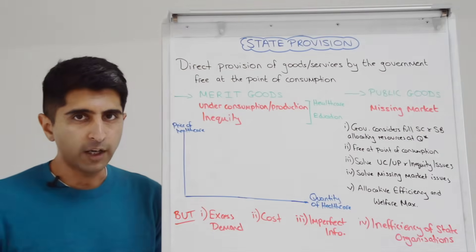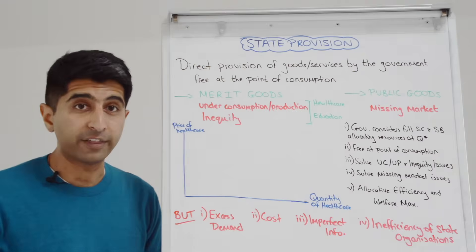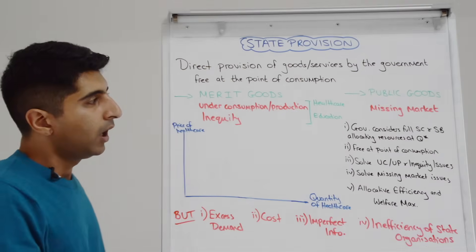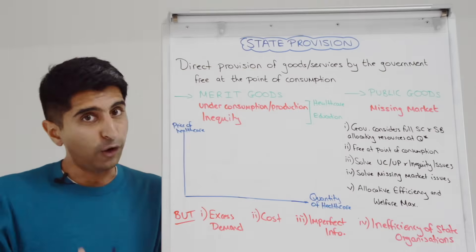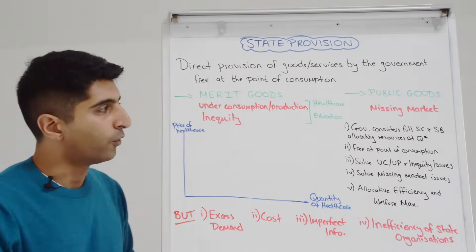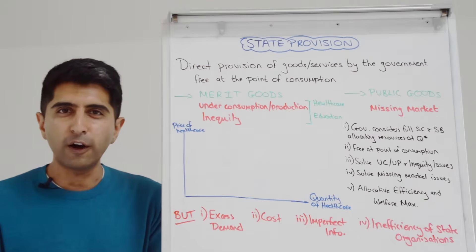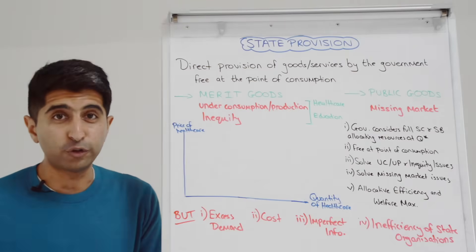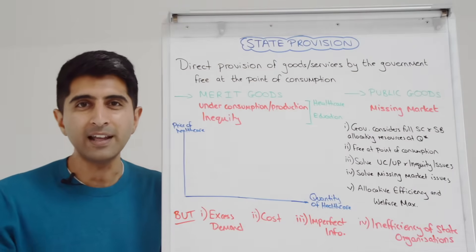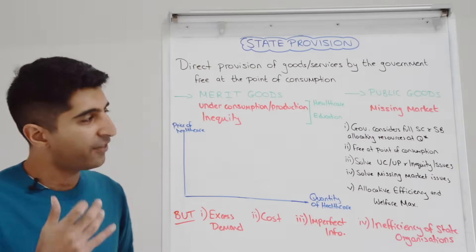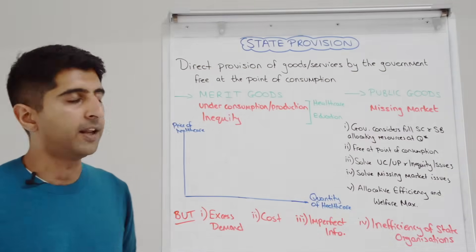So how does state provision work? Let's understand this by linking to the market for healthcare. We make a lot of assumptions about what the government knows — we assume the government knows the full social cost and social benefit, meaning they know all the externalities present, they can value them all perfectly, and thus they know what the socially optimum level of output is.